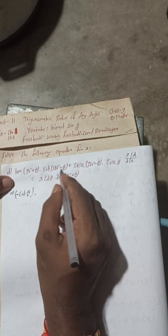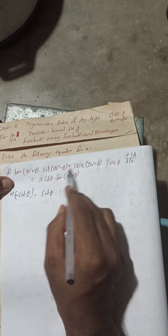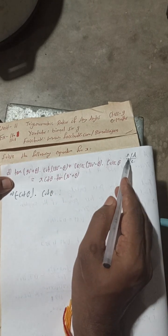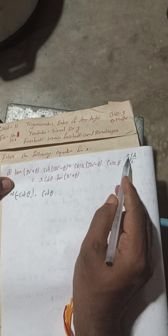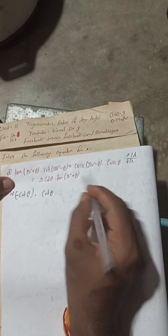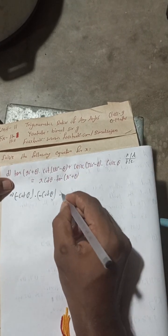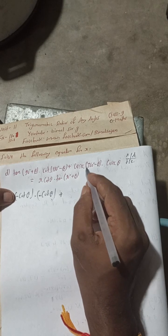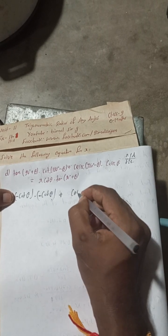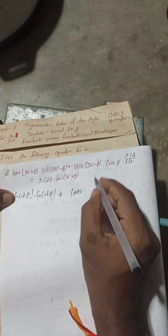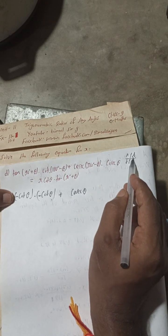For cot(180° − θ): 180° − θ is in the second quadrant where sine and cosec are positive, so cot is negative. Therefore cot(180° − θ) = −cot θ. For cosec(360° − θ): we now find which quadrant this falls in.